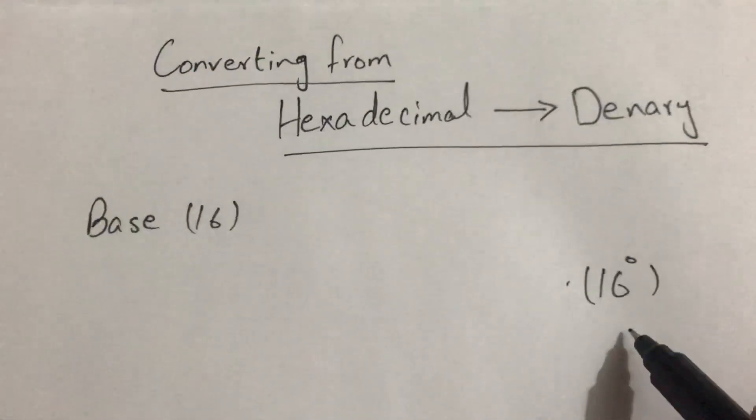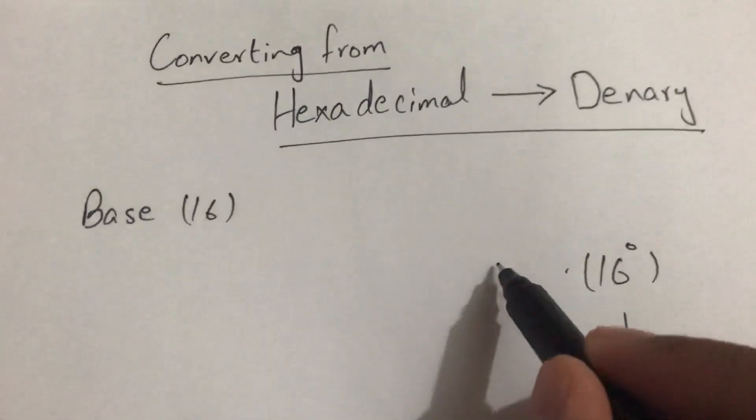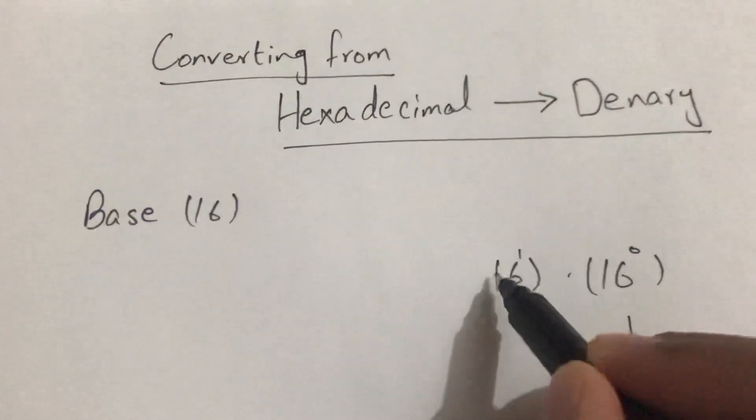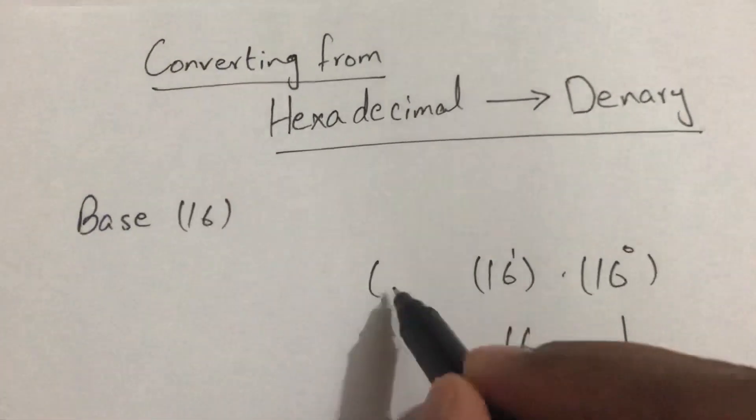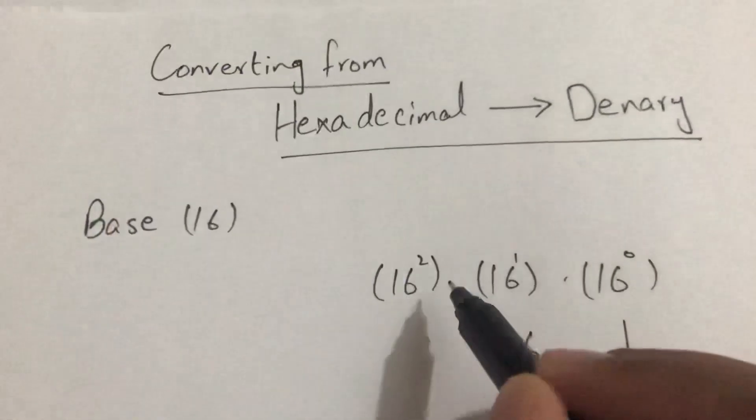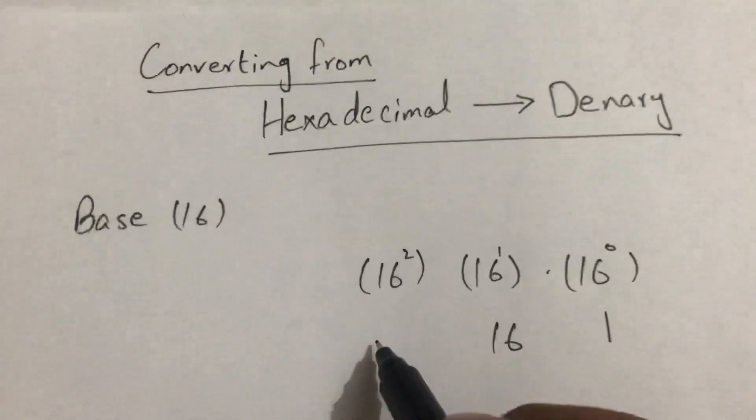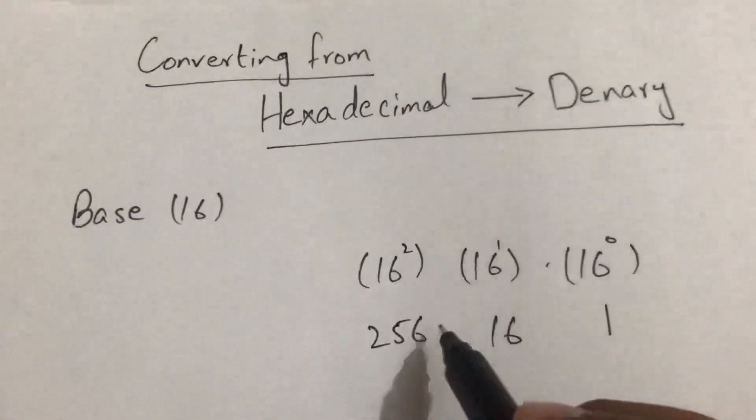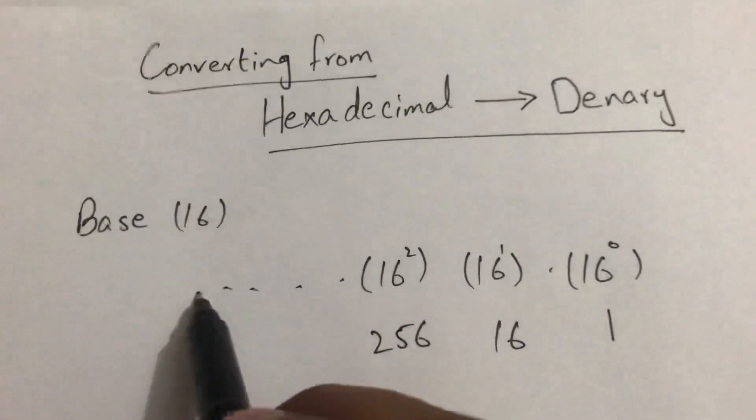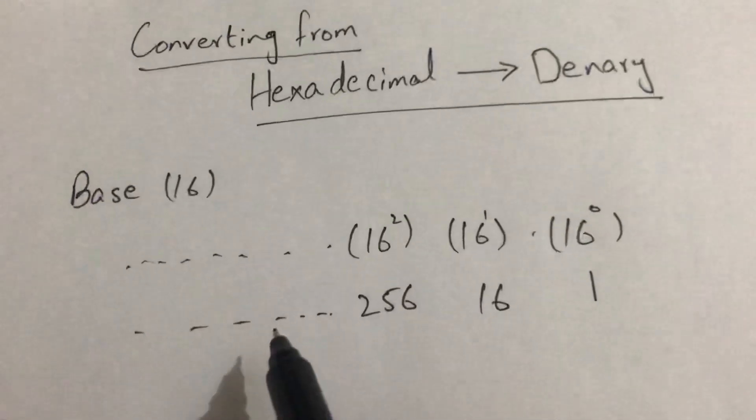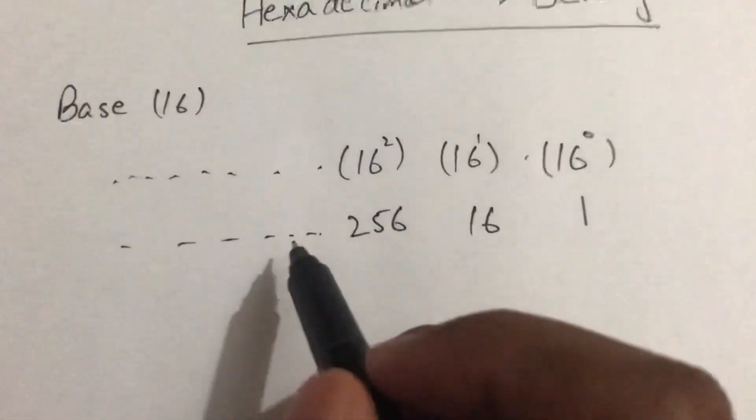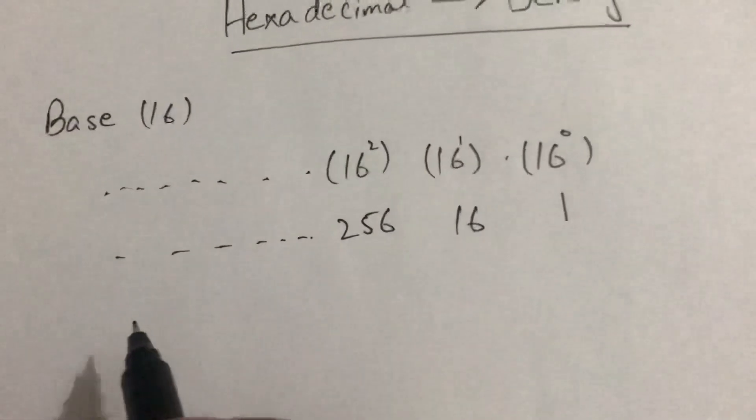16 raised to the power 1 equals 16, 16 raised to the power 2 equals 256, and so on. The values will be increasing, so we will take an example.